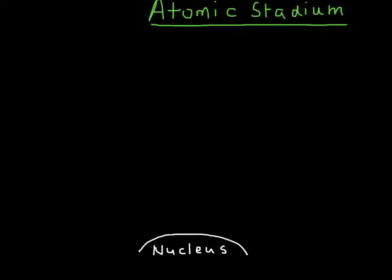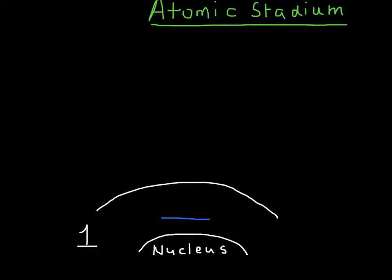Just like a regular stadium, we have blocks of seats that are available. This first block of seats would be energy level one. And in every block of seats, there are different rows. Here's our first row, and this is going to be row S. Within the rows, there are individual seats.